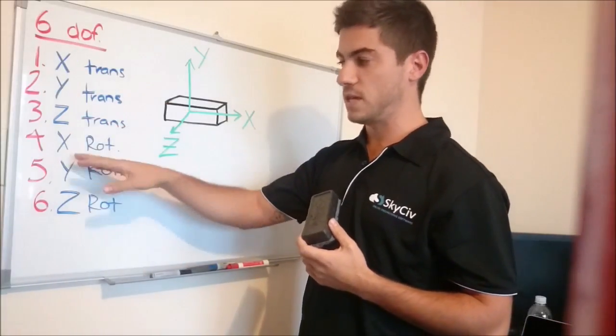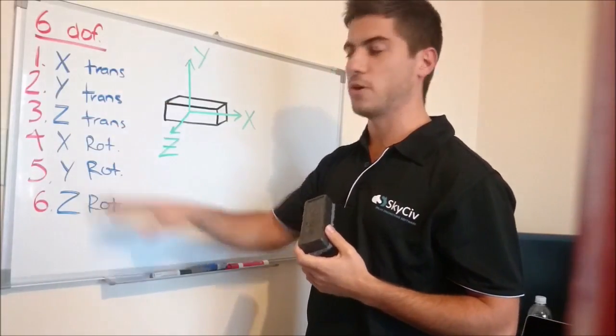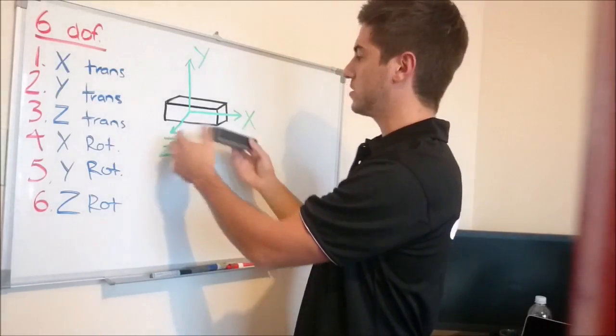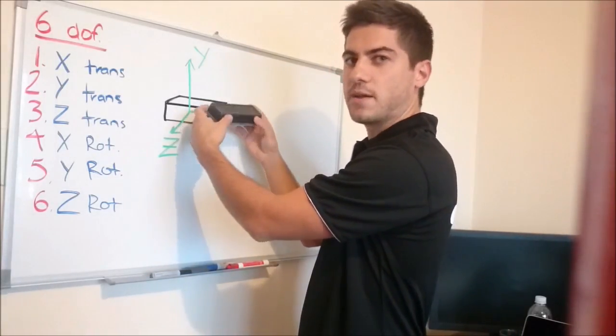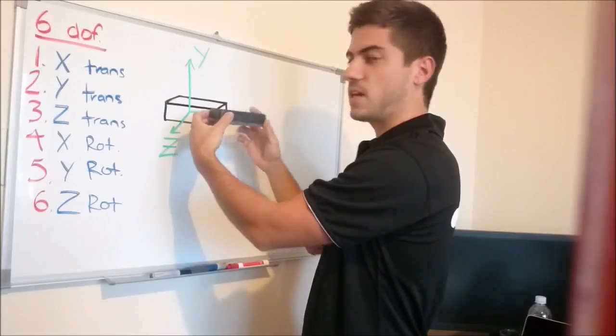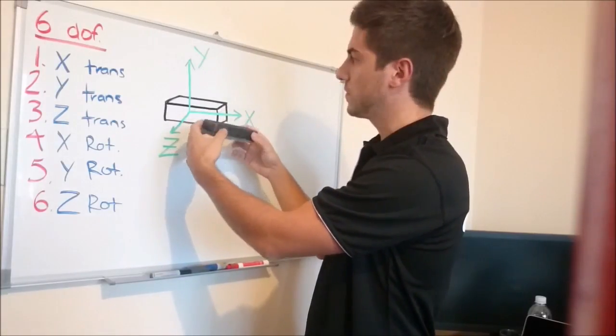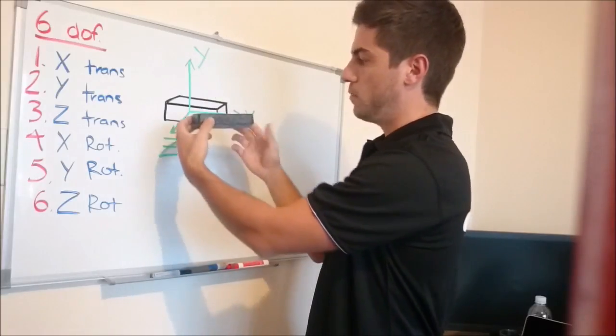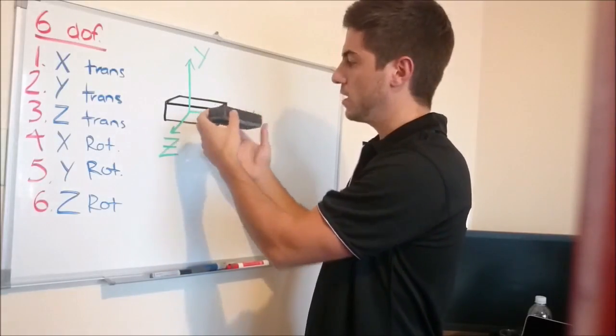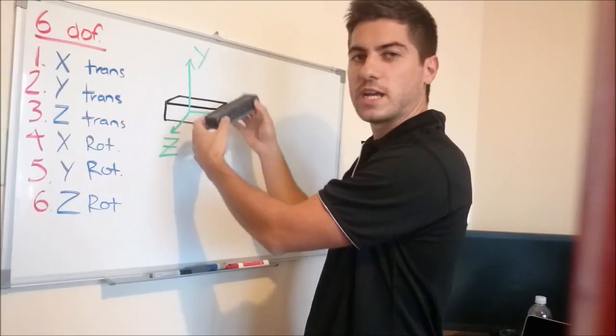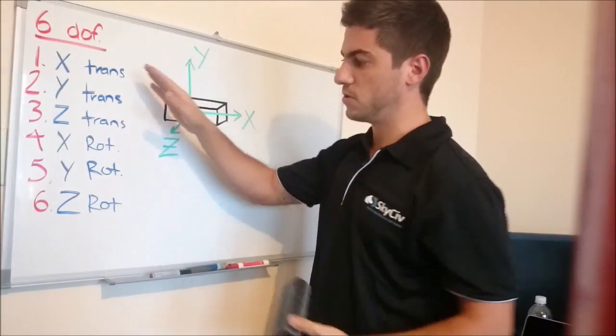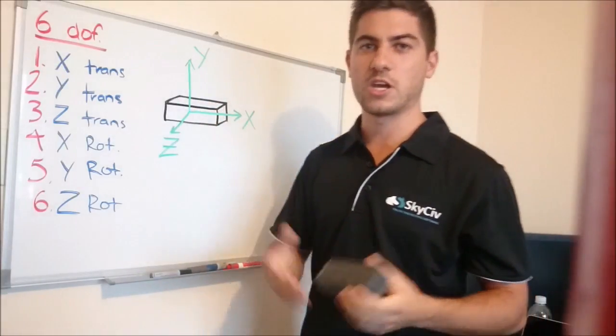The second set of 3 degrees of freedom are the rotations. So our X rotation is just the rotation about the X axis. You can see that the eraser is rotating about that axis. Then we have Y, which is rotating about the Y, and finally Z, rotating about the Z axis there. So that's your 6 degrees of freedom, and now we're going to show you how to apply those.